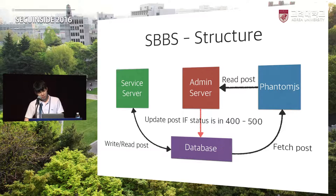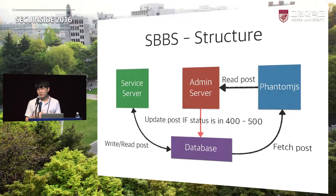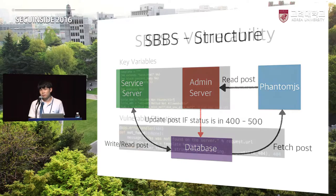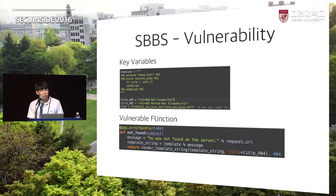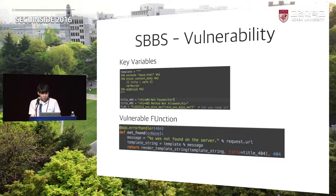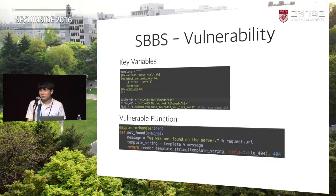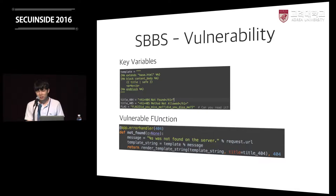여기서 주의해야 할 것은 팬텀.js에 의해서 XSS 공격이 실행됐을 때 그 페이지가 400 혹은 500 사이에 스테이터스 코드를 갖는 페이지로 리디렉션 되면 거기에서 나오는 에러 코드 혹은 에러 정보가 사용자들한테 보여지는 그런 형태로 되어 있습니다. 취약점은 총 두 개의 부분으로 알아챌 수 있어요. 어드민 서버 소스 코드는 사용자들한테 공개된 상태였고, 포스트에 대한 필터링이 전혀 이루어지지 않았기 때문에 XSS 공격이 이루어지는 걸 쉽게 알아챌 수 있었습니다.